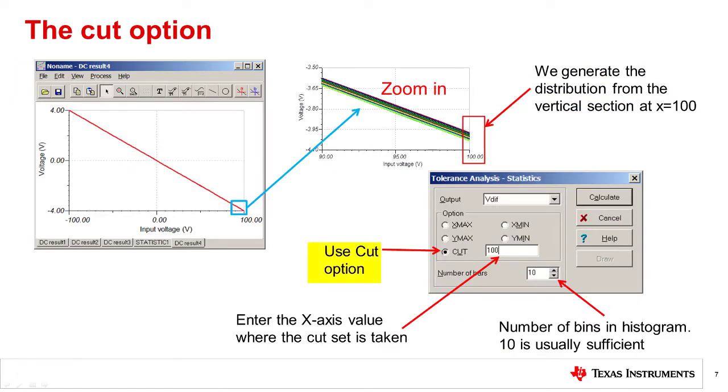Under Statistics, we want to select the Cut option. Cut will select the distribution on the y-axis for a particular value on the x-axis. In this case, we want to look at the gain error at the ends of the transfer function, or where VN equals 100 volts.